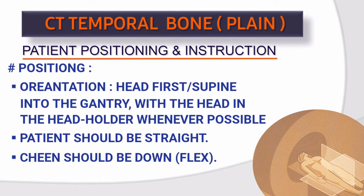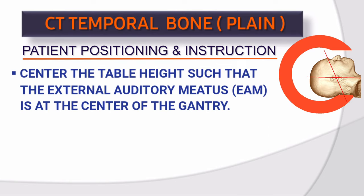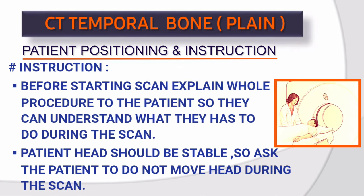Patient positioning and instructions: Position the patient head-first supine into the gantry with the head in the head holder whenever possible. The patient should be straight, chin down in flex position. Center the table height such that the external auditory meatus (EAM) is at the center of the gantry. Before starting the scan, explain the whole procedure to the patient. Ask the patient to keep their head stable and not move during the scan.